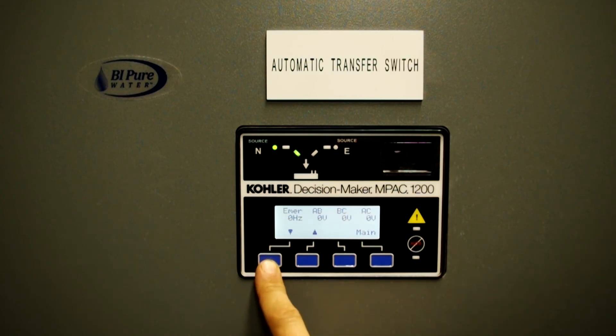If your emergency power was on, it would tell you your voltage between your phases, as well as your phase to neutral. And how many amps in line A, B, or C you're supplying.